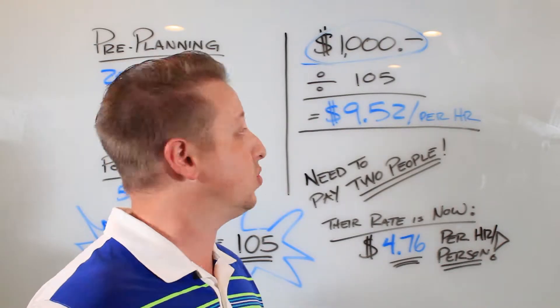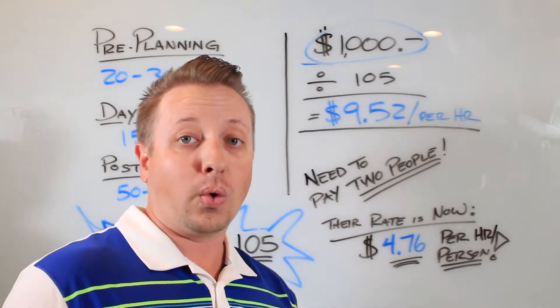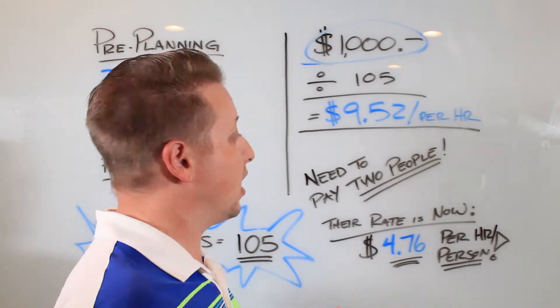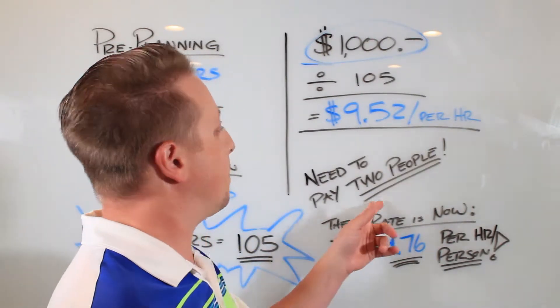And that's on the low side. That's nine dollars and 52 cents an hour per person. But here's the thing: you're like, well, it's more than minimum wage, Eric. Well, here's the thing: we normally pay two people.